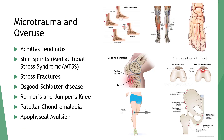Some of these injuries, while small, can be debilitating. Common repetitive overuse and stress injuries include Achilles tendonitis, shin splints, stress fractures, Osgood-Schlatter's disease, runner's and jumper's knee, patellar chondromalacia (a softening of the underside of the patella), and apophyseal avulsions.